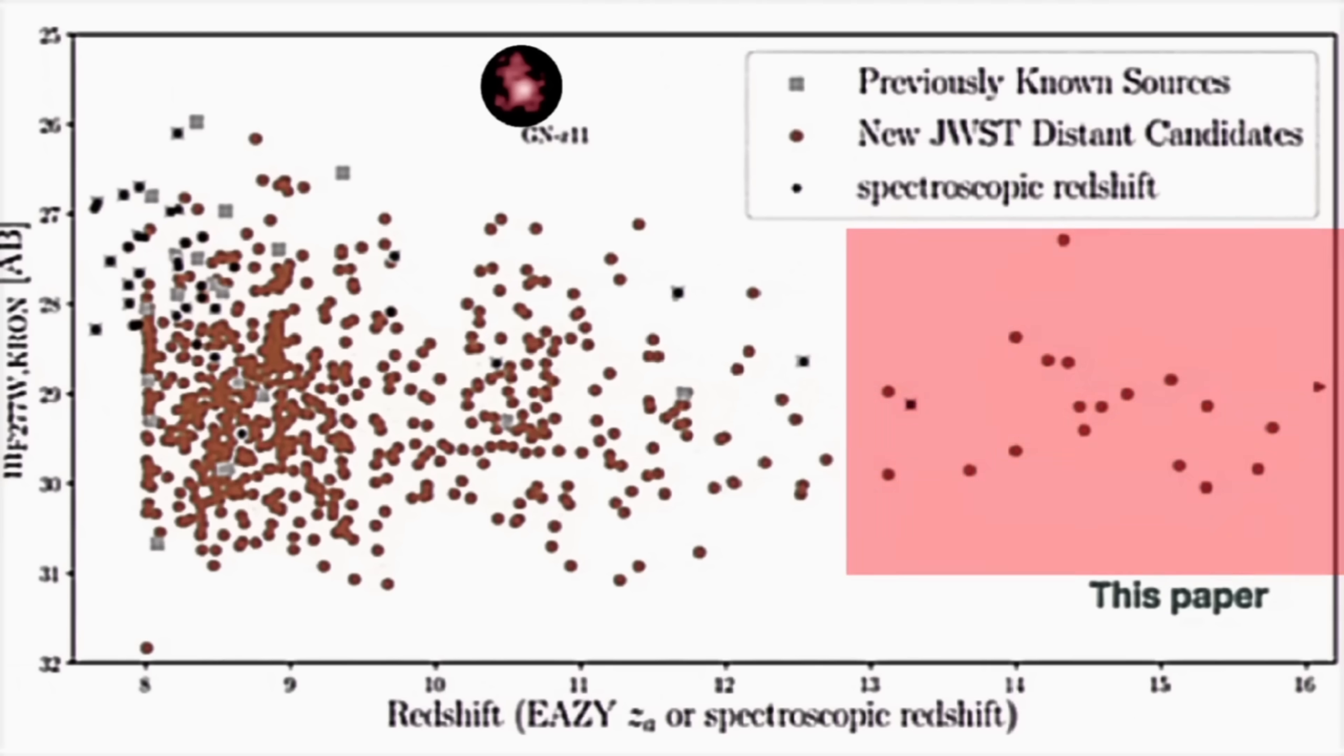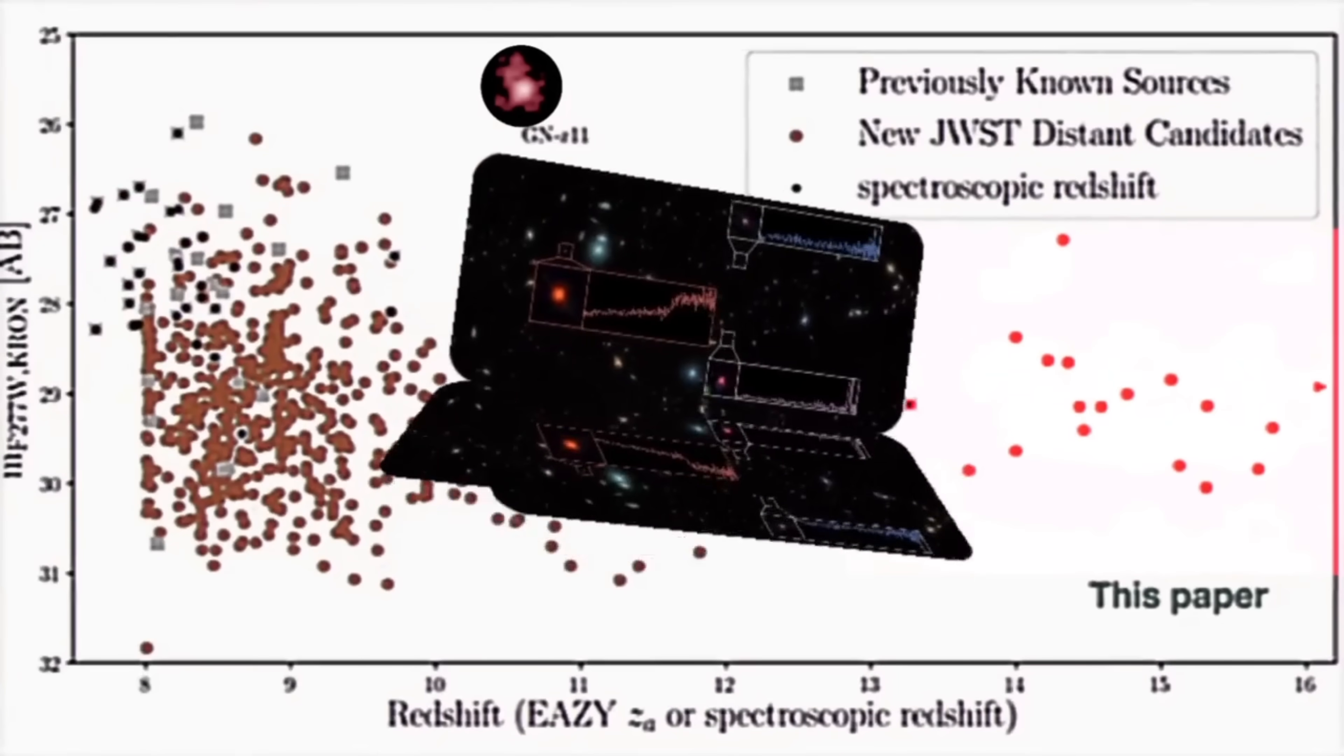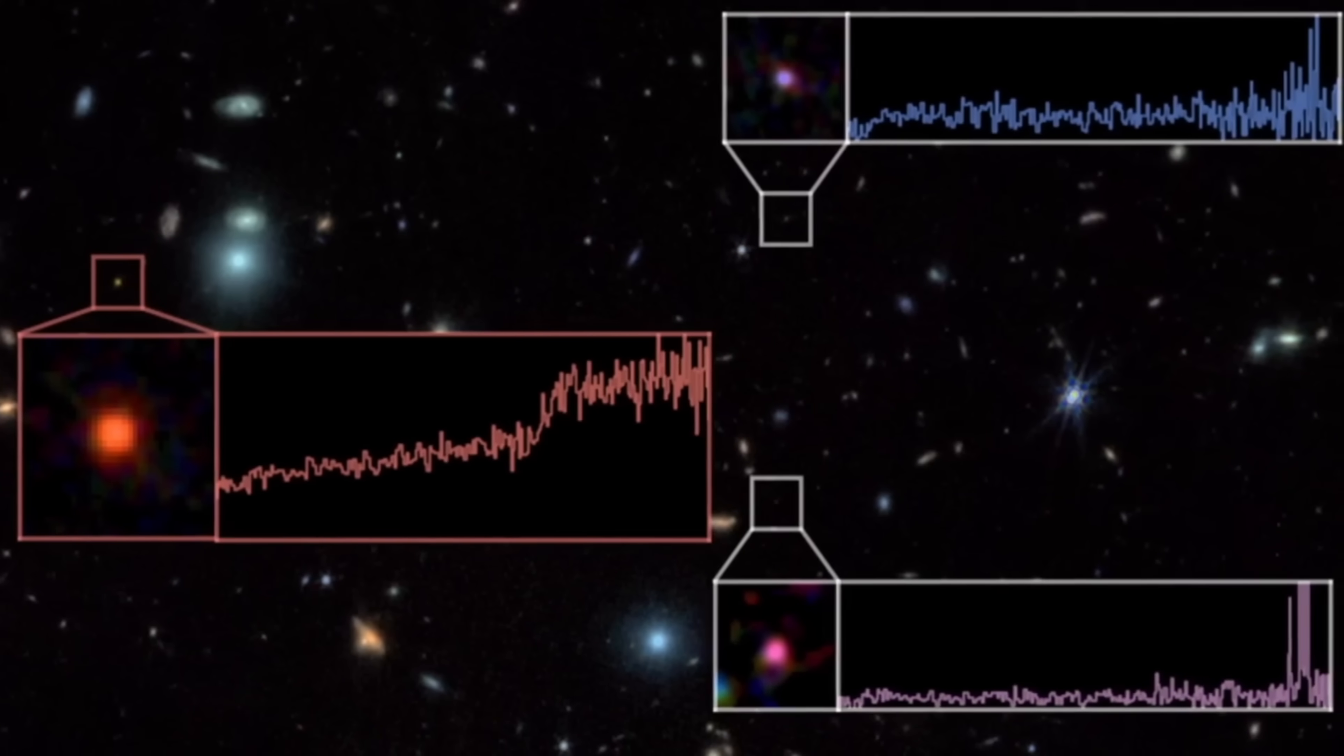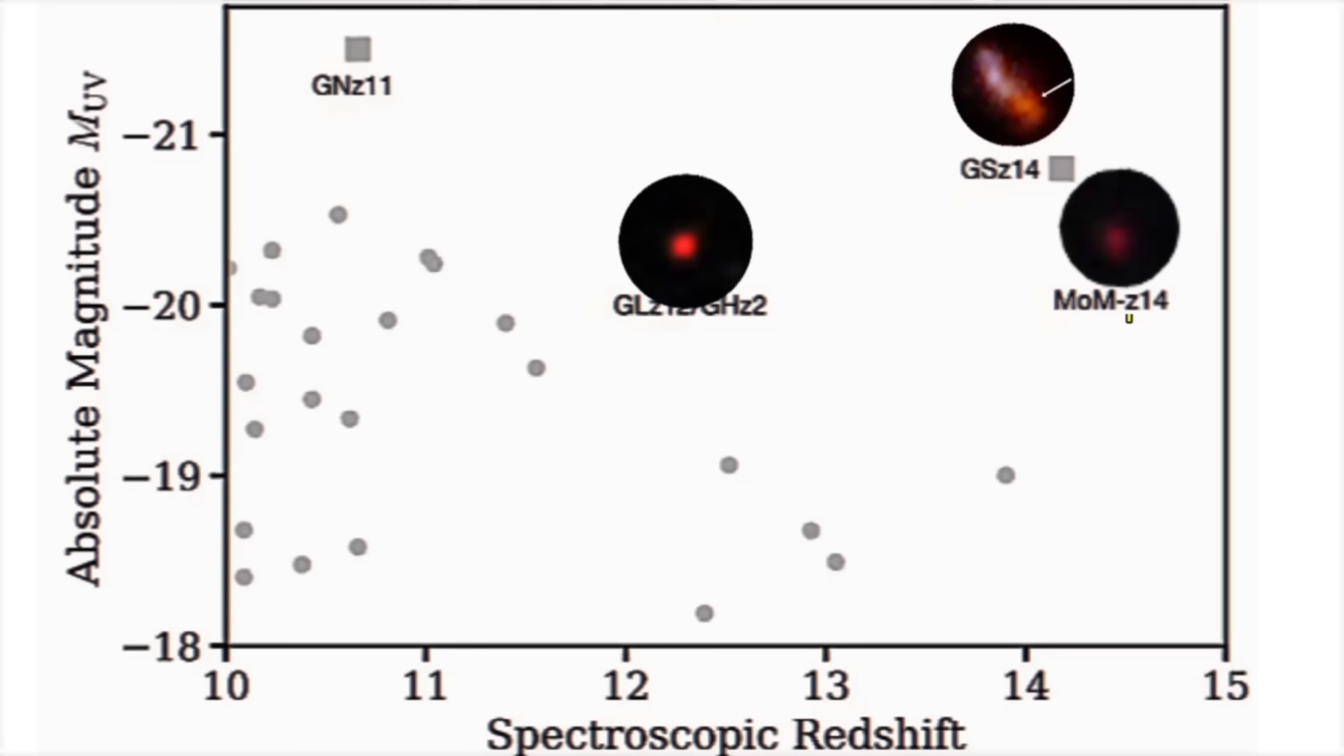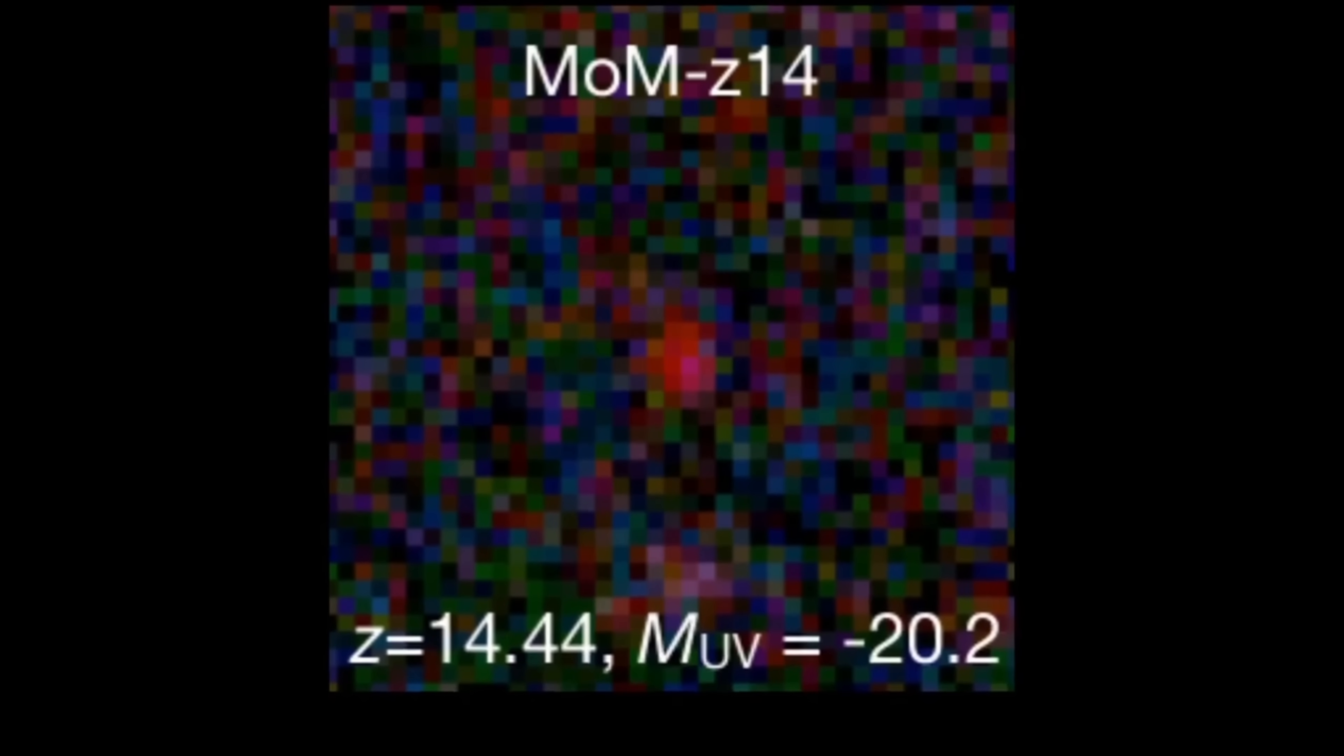It found many more distant galaxies than anyone expected. What surprised scientists even more was that some of these galaxies were at record-breaking distances, far beyond what was previously thought possible, even galaxies beyond Redshift 14. After careful spectroscopic tests, which are used to confirm the exact distances of galaxies, the currently most distant confirmed galaxies are JADES GS-z14-0 and JADES GS-z13-0, with JADES GS-z14-0 holding the record as the farthest confirmed galaxy at a Redshift of 14.4. This means we are seeing it as it was when the universe was only about 280 million years old.